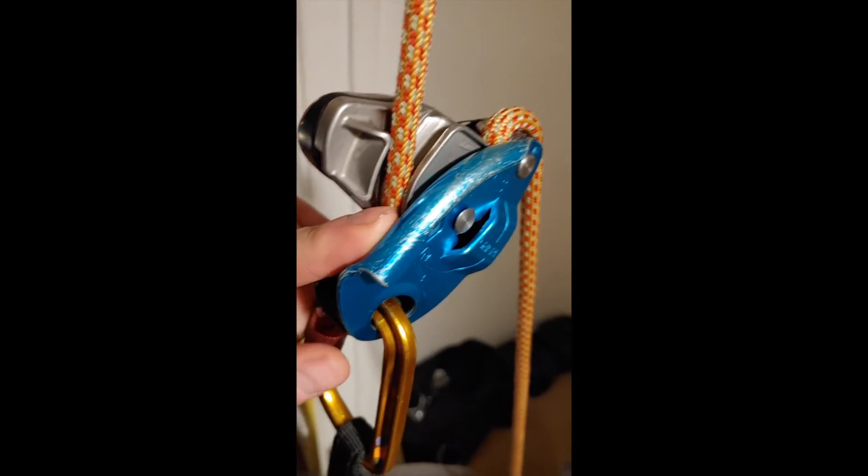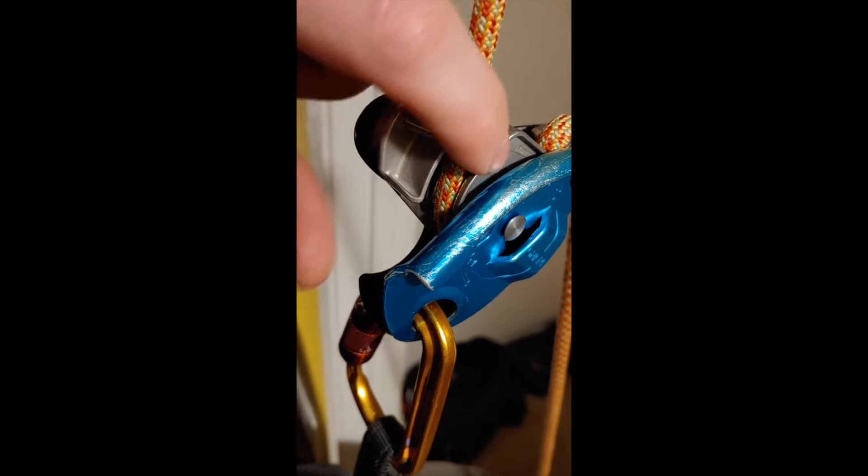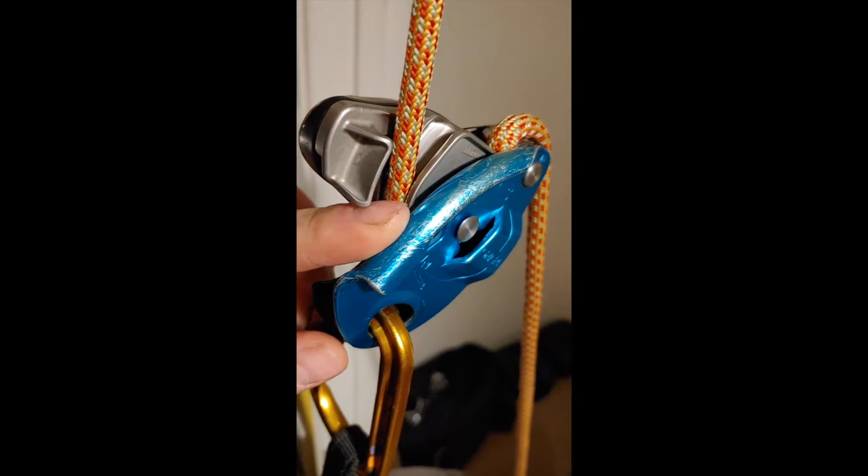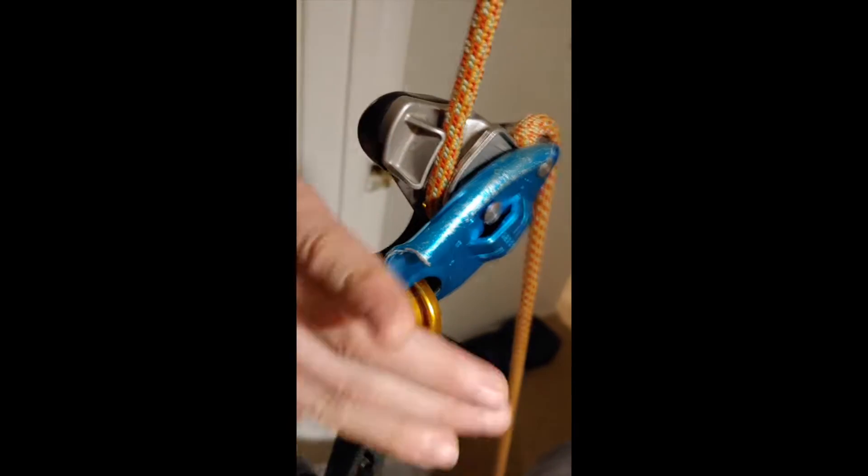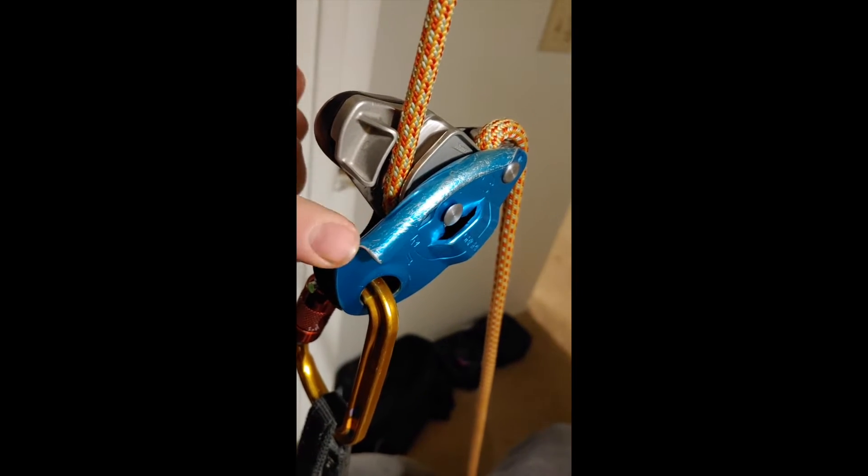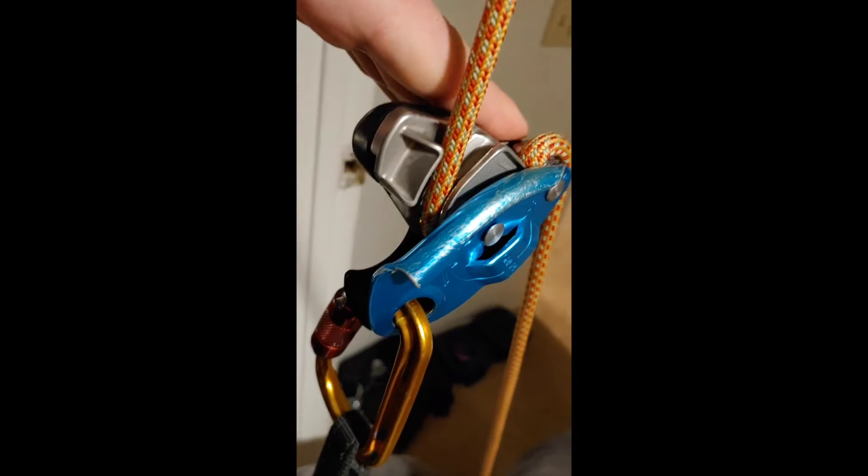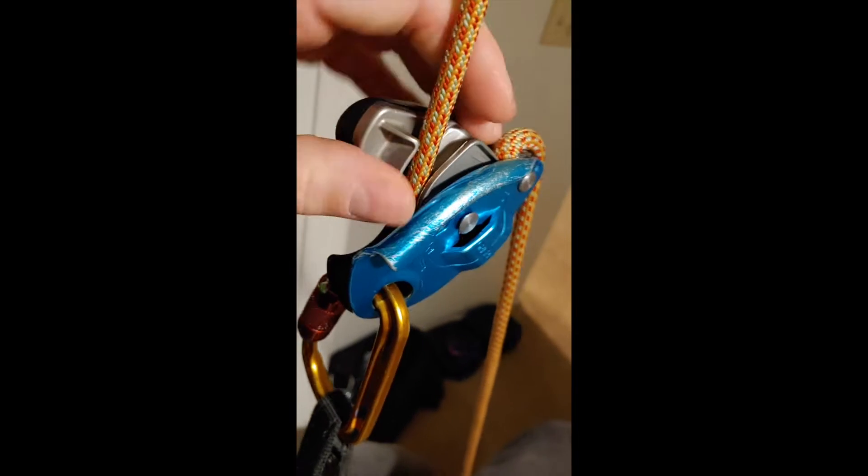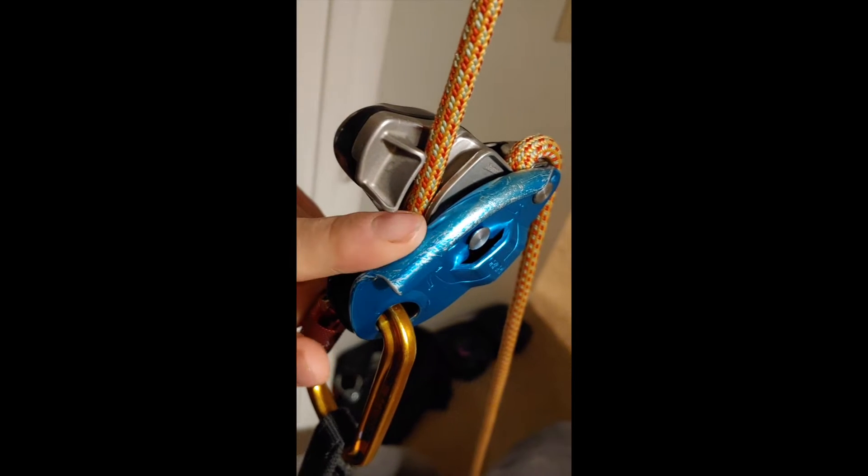It's just harder. Essentially, the rope, this strand, needs to squeeze through this gap while the climber or the user of the Grigri is weighting the device because the cam is up. So the cam has to be up for the rope to fit through there.